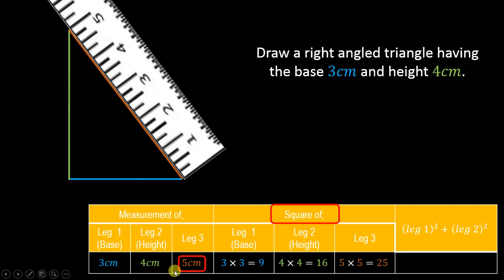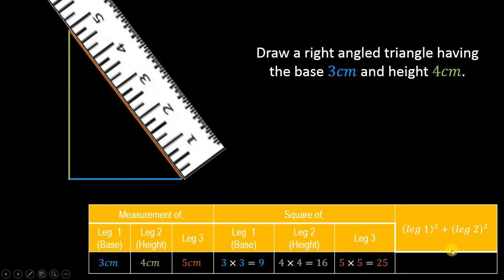So first we found the measurements of all three legs, and after that we calculated the squares of all three leg measurements. Now we come to the last column. It says: Leg 1 squared plus Leg 2 squared — meaning square Leg 1, square Leg 2, and add both answers together.